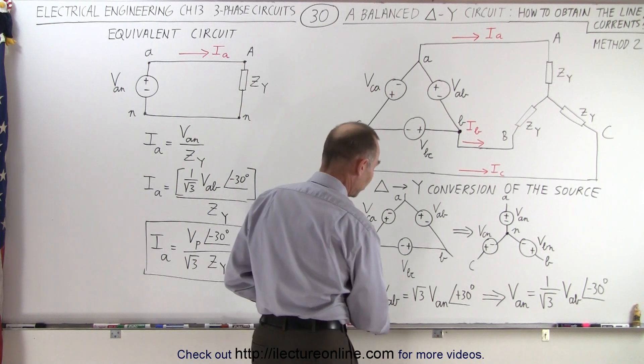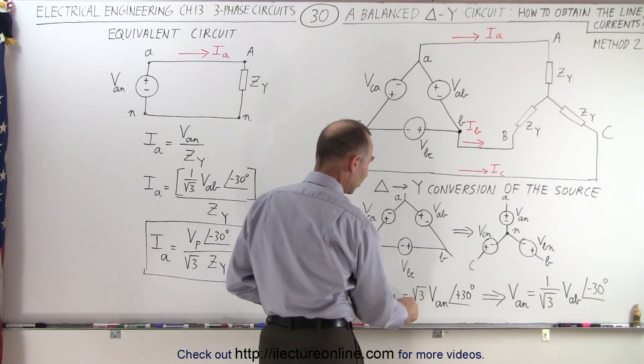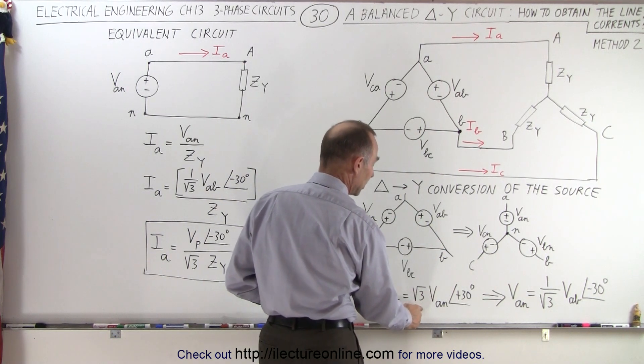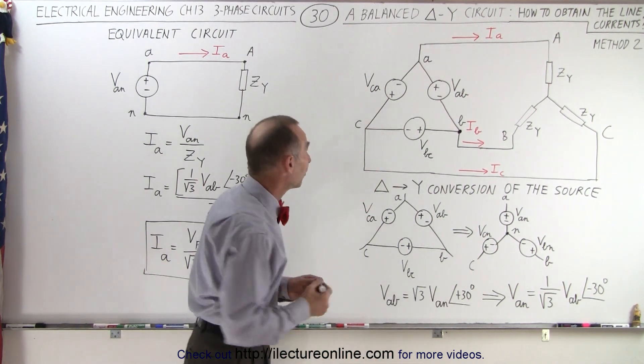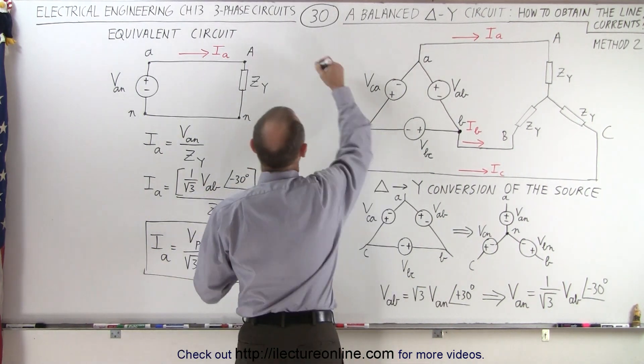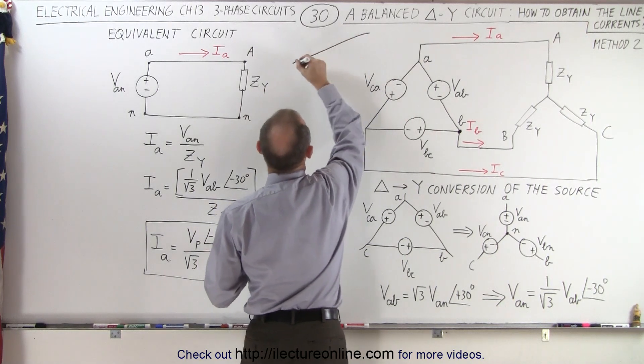And we know the relationship is such that VAB, the line voltage, is going to be equal to the square root of 3 times the phase voltage with a 30 degree phase difference. If we're going to graphically show that, you can see that there would be the line voltage...